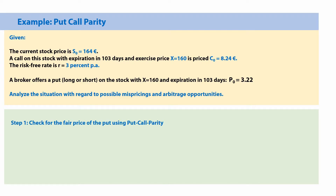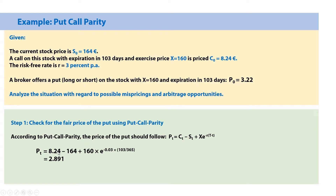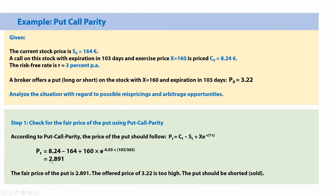So we apply put-call parity and plug in all the numbers: the call price, the stock price, then we discount the exercise price with continuous compounding at 3% — don't forget the negative sign — and the time is 103 days out of 365, which is around 0.28 of a year. If we calculate that, we find that the fair price of the put should be 2.891. The offered price of 3.22 is obviously too high.